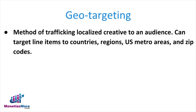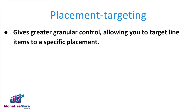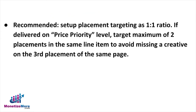Geotargeting is a highly advantageous method of trafficking localized creative to an audience. With geotargeting, you can target line items to countries, regions, US metro areas, and zip codes. You can even search for a specific country from DFP's library and drill down to a specific city, or use the search targeting feature to exclude places. For example, you can target country equals England and city equals London to target England but exclude London. Placement targeting gives you even greater granular control, allowing you to target line items to a specific placement, like a 728x90 banner ad on your homepage or across all placement inventory within your network. We recommend setting up placement targeting as a 1x1 ratio where one line item equals one placement.